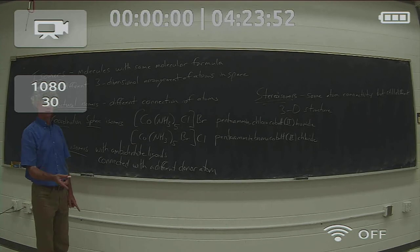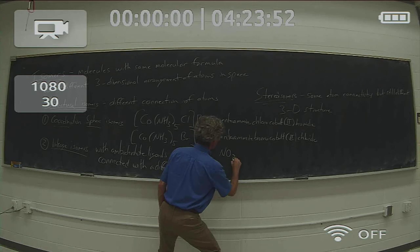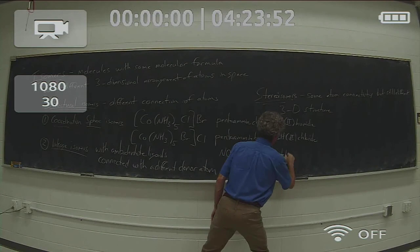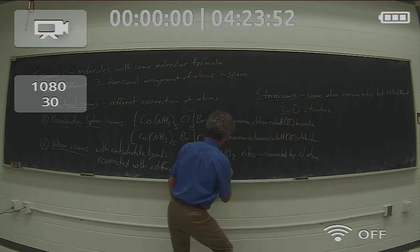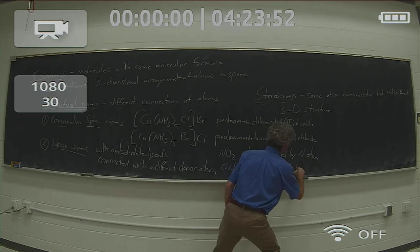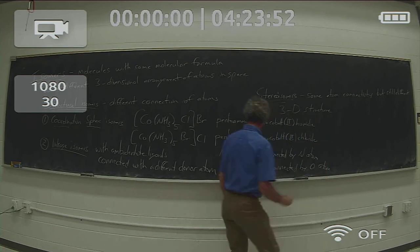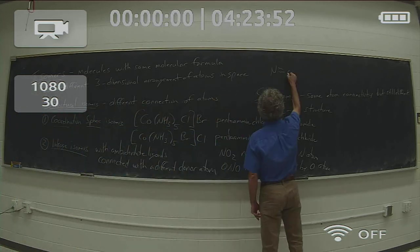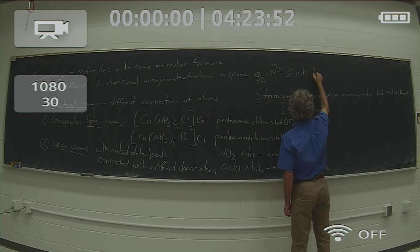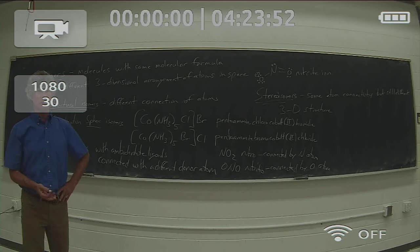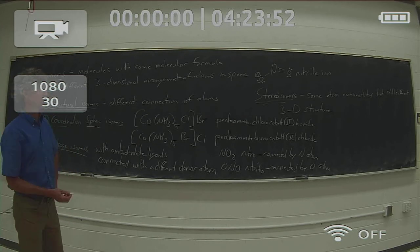One of the ones you probably worked with most in general chemistry would be NO2, which is nitro, where it's connected through the nitrogen. And ONO, which is nitrito, which is connected through the oxygen. Both of these are nitrite, NO2 minus, but nitrite has lone pairs on both the nitrogen and the oxygen, so it can potentially bind to a central metal with the lone pair on nitrogen or with one of the lone pairs on the oxygen. And of course it has a resonance structure with the negative charge on the other oxygen.